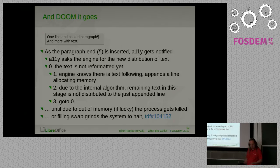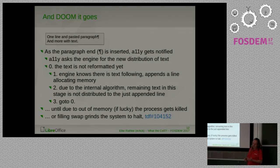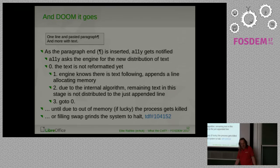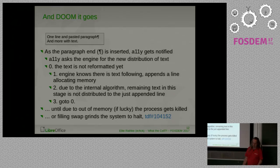The edit engine knows there is text following — we just pasted it at some position — but due to its internal algorithm, it tries to redistribute the text but can't decide when to do it. It allocates memory for the next line to put the text there, but doesn't quite move the text. It's in a state where it can't decide between its cursor positions and the following text. It adds a line but doesn't distribute the text, then goes back to step zero where the text is not reformatted yet.